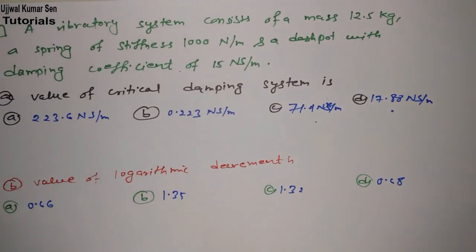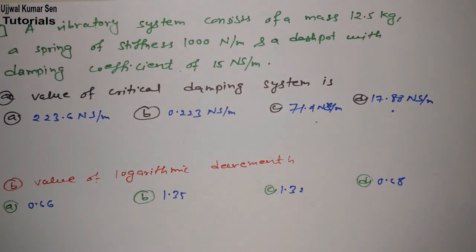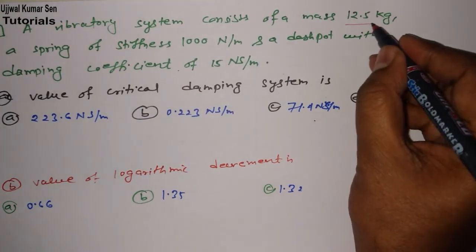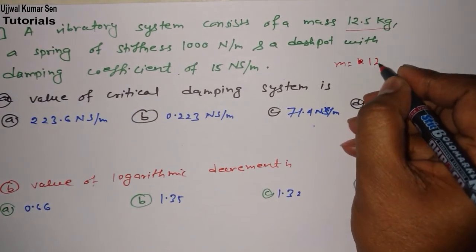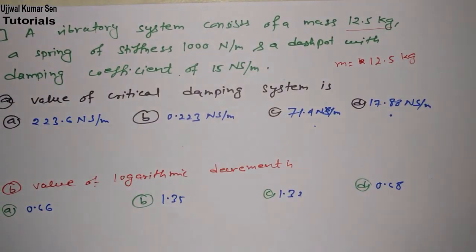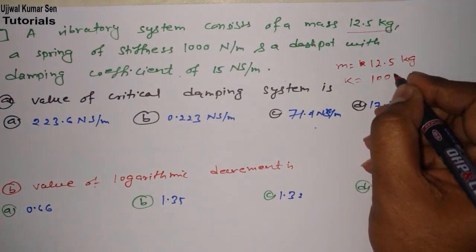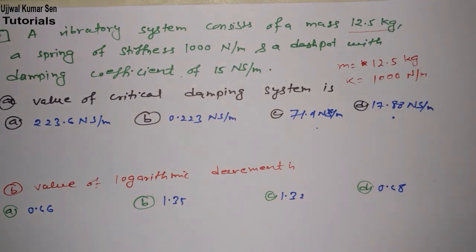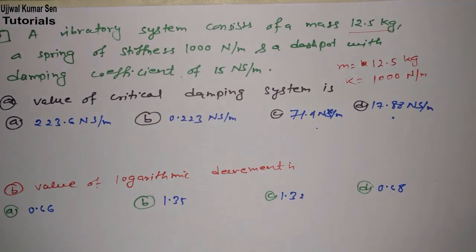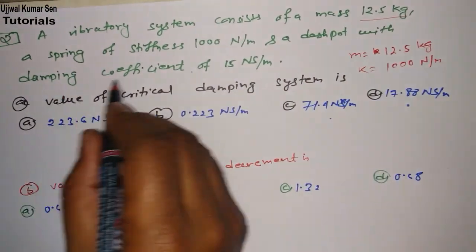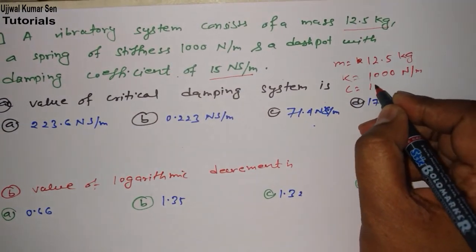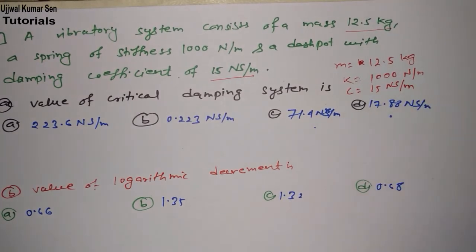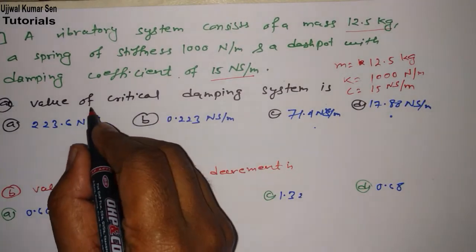Here is the numerical problem. In this problem what we have given: a vibratory system consists of a mass, so mass is 12.5 kg. A spring of stiffness k equals 1000 newton per meter. A damper with damping coefficient, that means actual damping coefficient they have given, 15 newton second per meter.